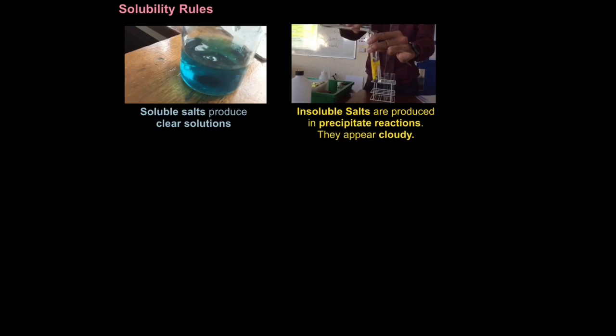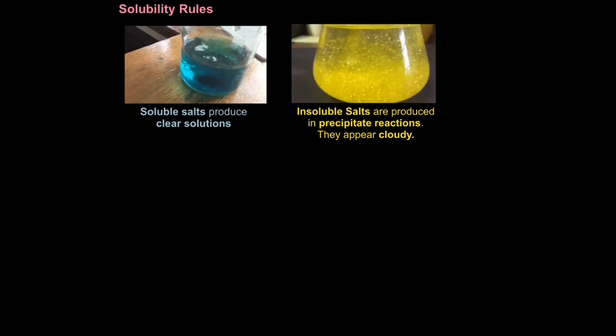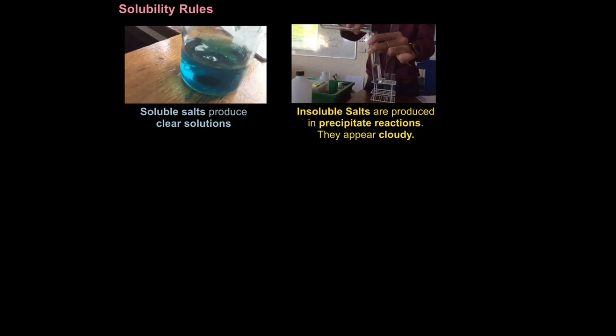Whereas insoluble salts are produced in precipitate reactions and they appear cloudy. You can see this one, you can see some sparkling sort of almost golden-like snowflakes. This is another precipitate reaction. You can see two soluble salt solutions and I'm reacting them together and you're getting an insoluble precipitate, an insoluble salt. You know this because it's powdery and light cannot pass through it, it reflects light.